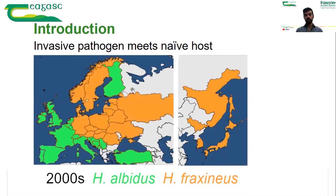As time passes over the next decade, the disease spreads through most of eastern, central, and northern Europe. People start seeing how ash trees look sick, and in 2006 a Polish researcher identifies that the cause is a fungus. The disease is baptized as ash dieback and people become more aware of it.